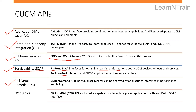Next is CDR on-demand APIs, which are used to fetch call detail records for billing purposes. Next is Cisco Click to Dial APIs, also known as Cisco Web Dialer. These APIs can be used to develop web applications that use the Web Dialer SOAP interface to provide a click-to-call feature for CUCM. Cisco Unified Communications also provides APIs for Cisco Unity Connection, WebEx, Chatbots, Jabber, etc.